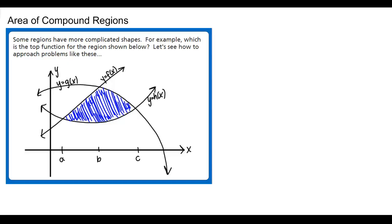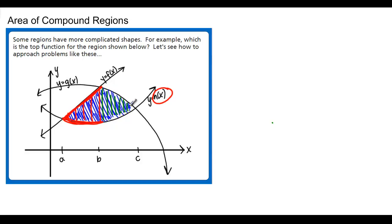Sometimes we have what we call compound regions. These are regions where if we start drawing little vertical lines as rectangles, for a while we have one function on the bottom — here it's H of X — and a different function on top — here it's F of X — and then all of a sudden it changes. In this graph, it changes right here. Now, for these green rectangles, the bottom function is still H of X, but the top function is the new function G of X. This means our top function is changing. We can split up our region here, and for each of these smaller regions, we know how to find the area between the curves by subtracting the top function from the bottom function.